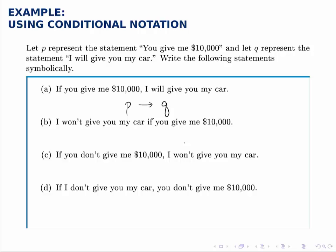For the second one, notice that we've reversed it a little bit and this is something that we can do in English, where the if goes with the second half of the sentence. So if you give me $10,000, that's P, that goes on the left, and then the first half of the sentence is the result, the implication. So if you give me $10,000, then I won't give you my car. Q is I will give you my car, so I won't give you my car is the negation of that, or not Q.